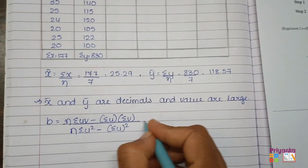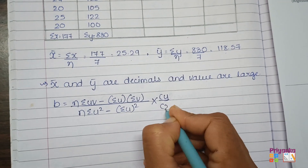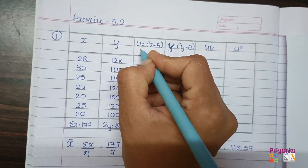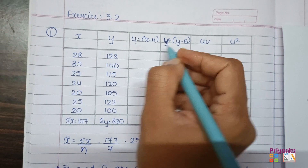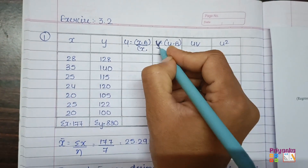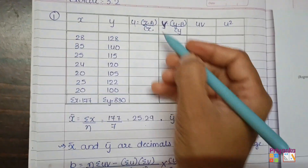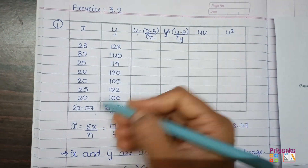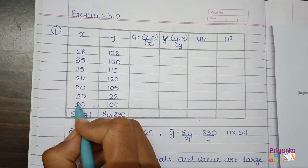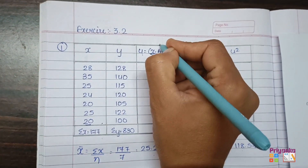Here I wrote the formula. Don't forget to write down cy and cx. To find u: x minus assumed mean divided by cx. To find v: y minus b divided by cy. For the x column, I will select the lowest value, which is 20, as the assumed mean (a).